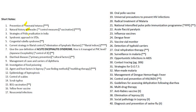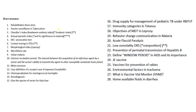Some of the questions asked as short notes include: prevention of neonatal tetanus, natural history of measles, strategies of polio eradication in India, syndromic approach in STDs, congenital rubella syndrome, acute encephalitis syndrome, diarrheal diseases, diphtheria, food poisoning, leprosy, leptospirosis, control of scabies, BCG vaccination, yellow fever vaccine, nosocomial infections, oral polio vaccine, universal precautions to prevent HIV, dengue fever vaccine, Weil-Felix typhoid, and oral rehydration therapy.